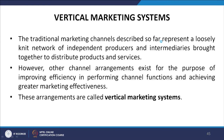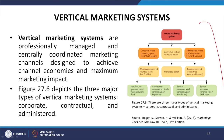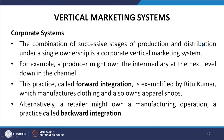What are vertical marketing systems? Traditional marketing channels represent a loosely networked arrangement of independent producers and intermediaries. However, other channel arrangements exist to improve efficiency in performing channel functions and achieving greater marketing effectiveness — these are called vertical marketing systems. Vertical marketing systems are professionally managed and centrally coordinated marketing channels designed to achieve channel economies and maximum marketing impact. Figure 27.6 depicts the three major types: corporate, contractual, and administered. In the corporate system, the combination of successive stages of production and distribution under a single ownership is called a corporate vertical marketing system.